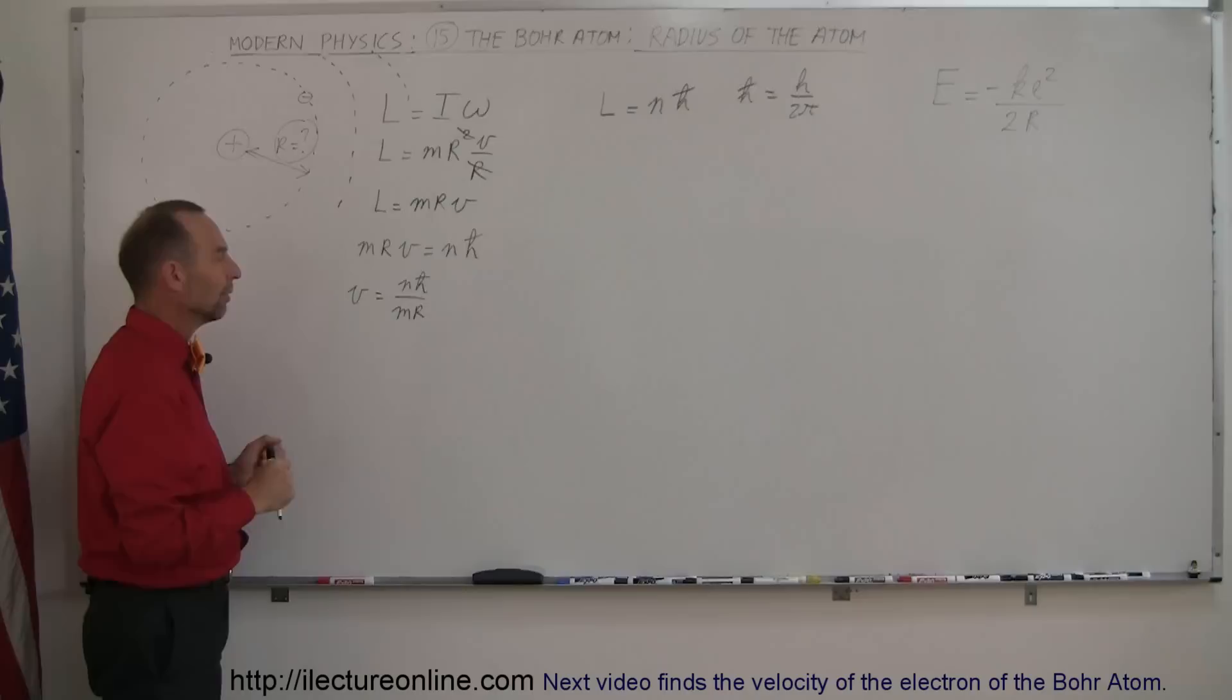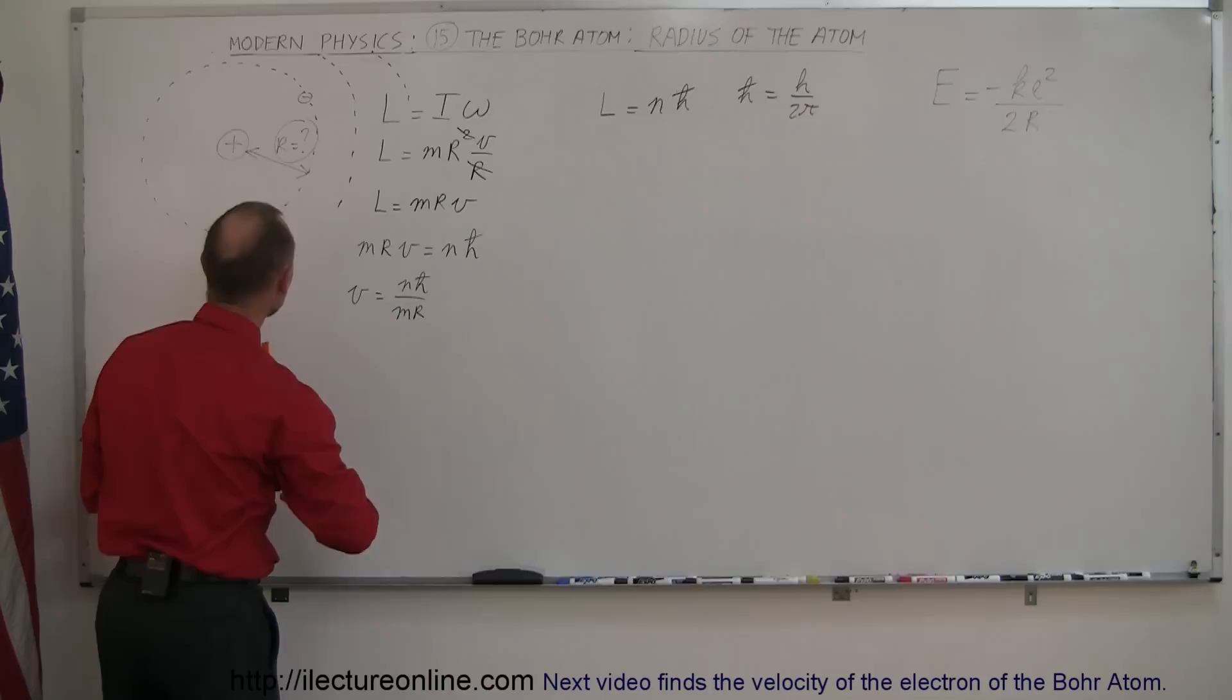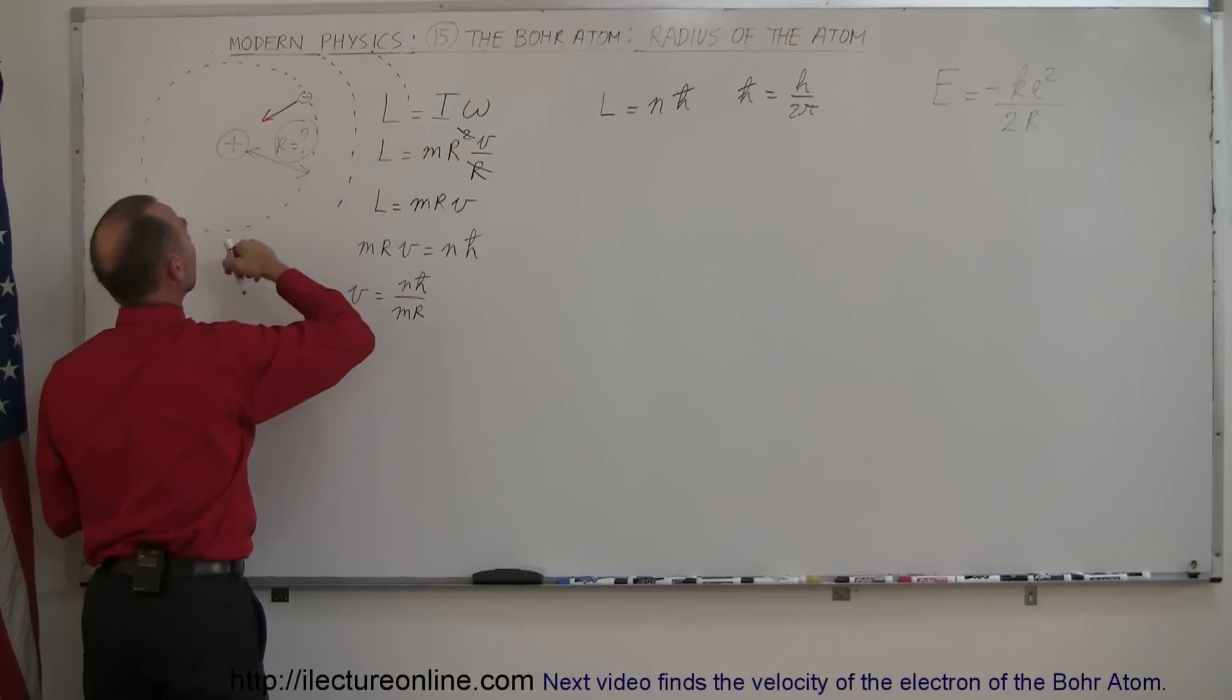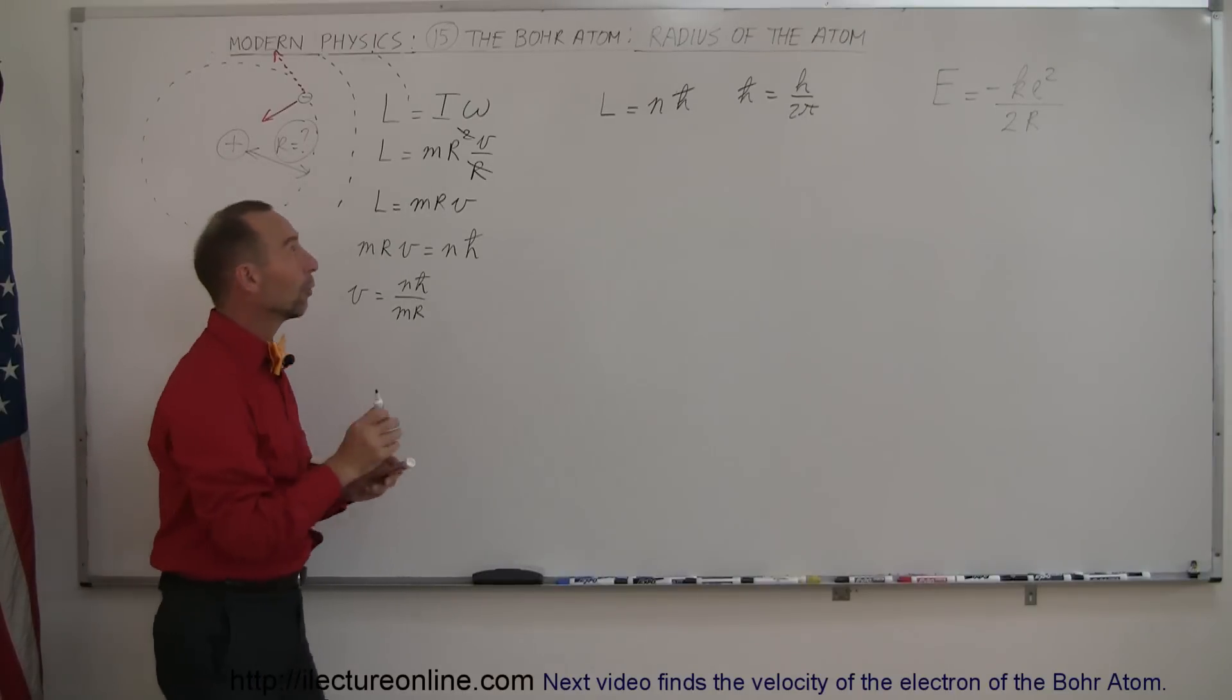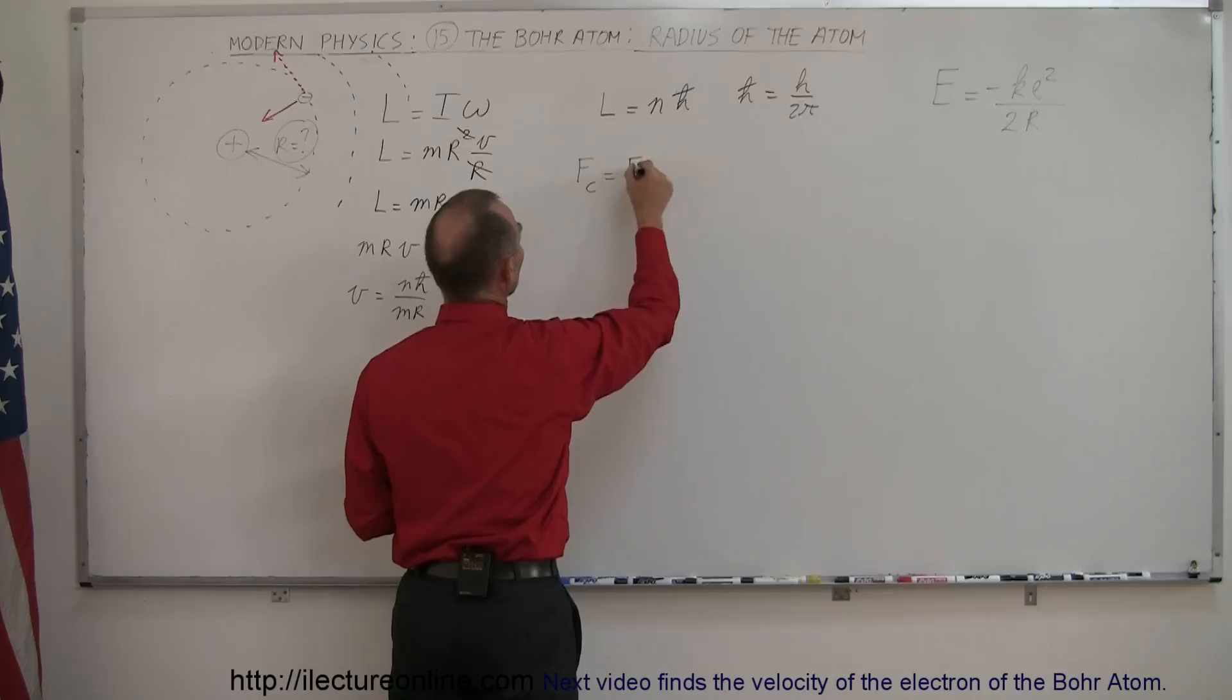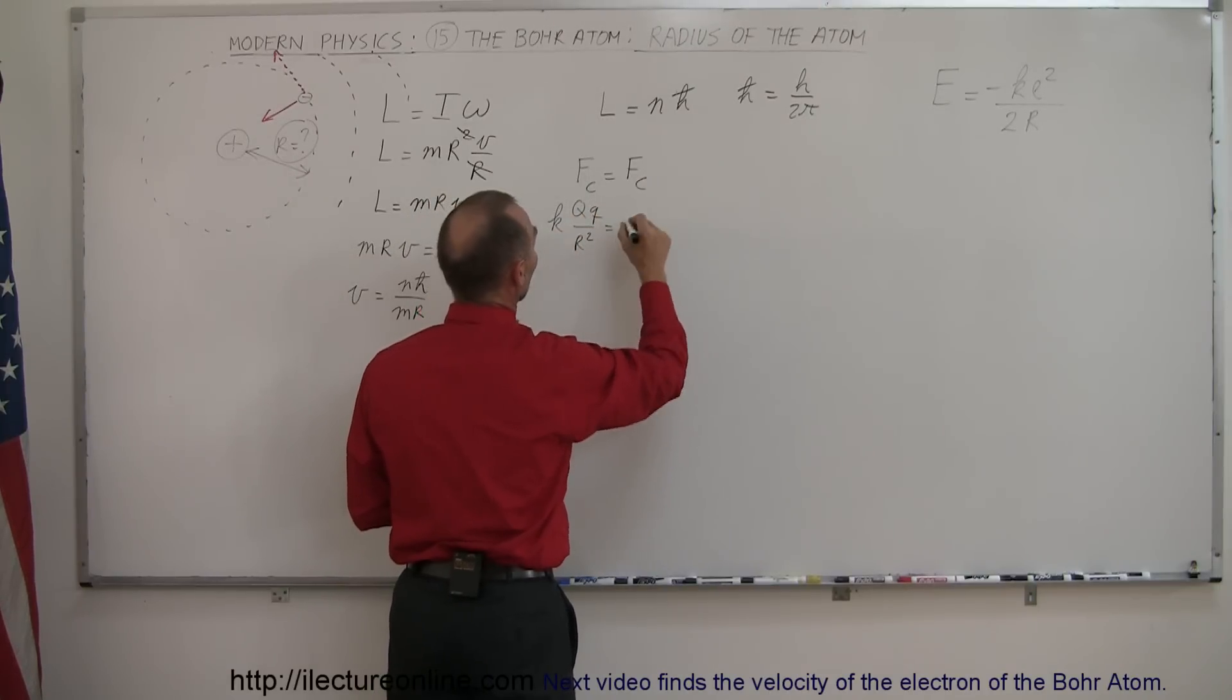We can use the concept that since the electron is going around in a circle, it feels the force of the proton pulling it inward, keeping it from going straight following Newton's first law. We know that the Coulomb force equals the centripetal force: F_coulomb = F_centripetal.